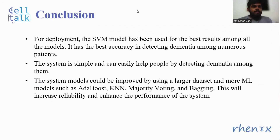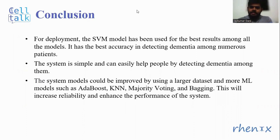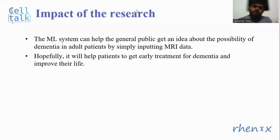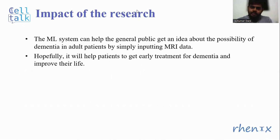In conclusion, for the deployment purpose, the SVM model has been used for the best result among all other models. It has the best accuracy in detecting dementia among numerous patients. The system is simple and can easily help people by detecting dementia among them. The system models could be improved by using a larger dataset and more machine learning models such as ADA boost, KNN, and bagging, which will increase reliability and enhance the performance of the system. This research has an impact on the life of the general public. The machine learning system can help the general public get an idea about the possibility of dementia in adult patients by simply inputting MRI data. Hopefully it will help patients to get early treatment for dementia and improve their lives.